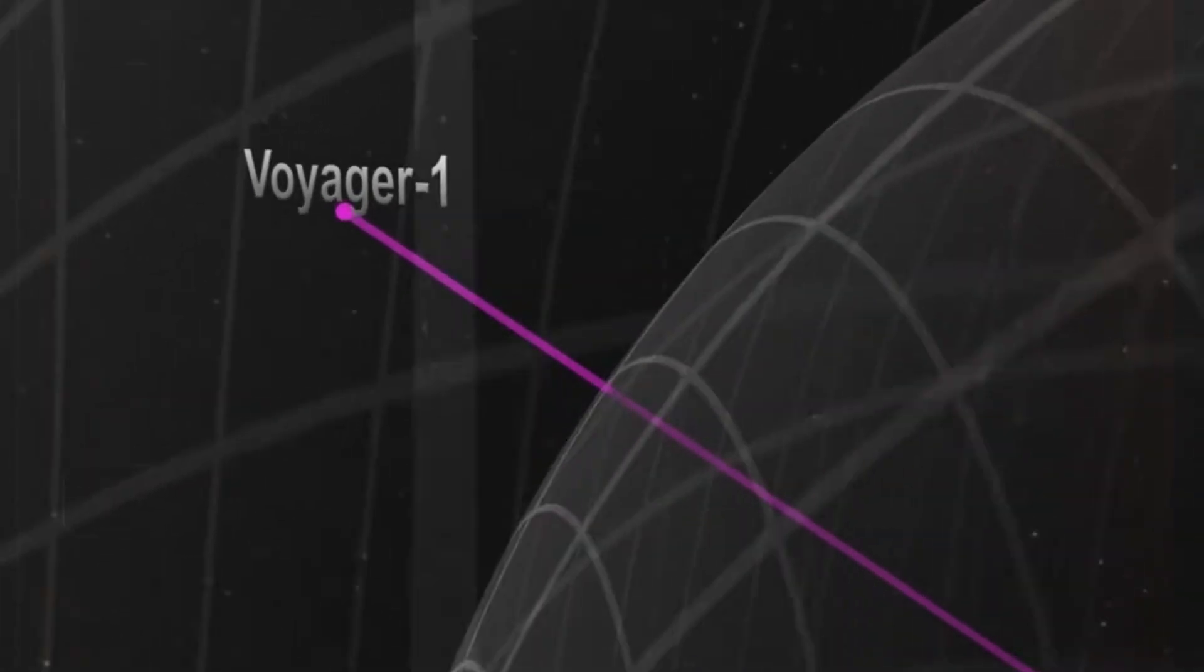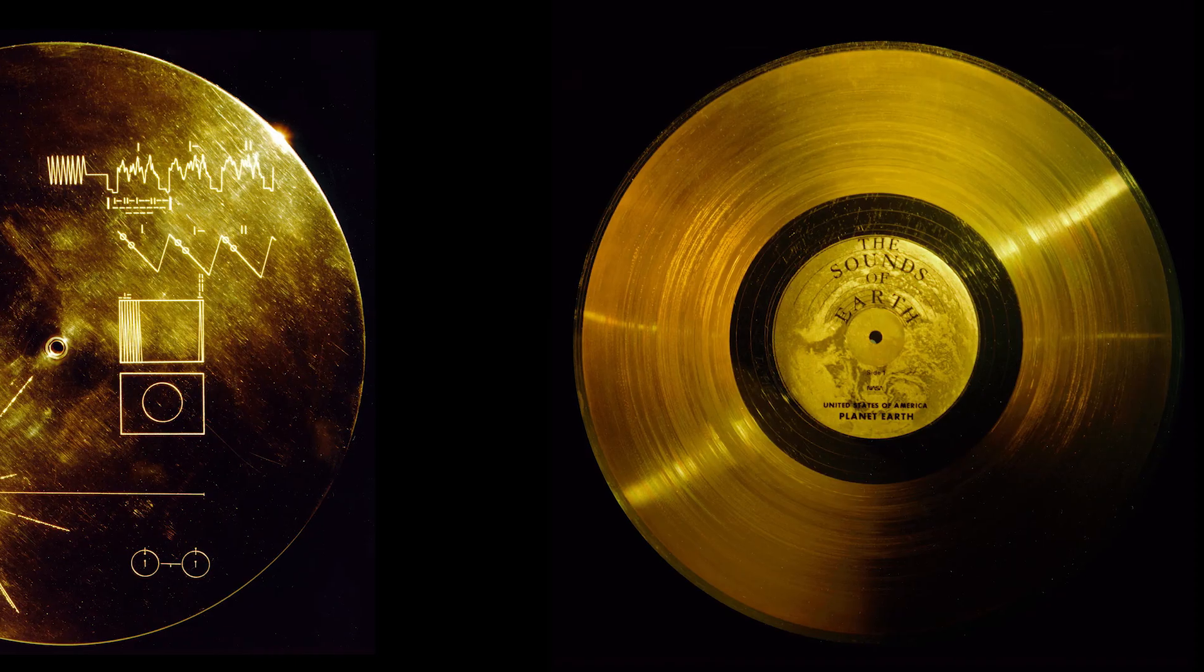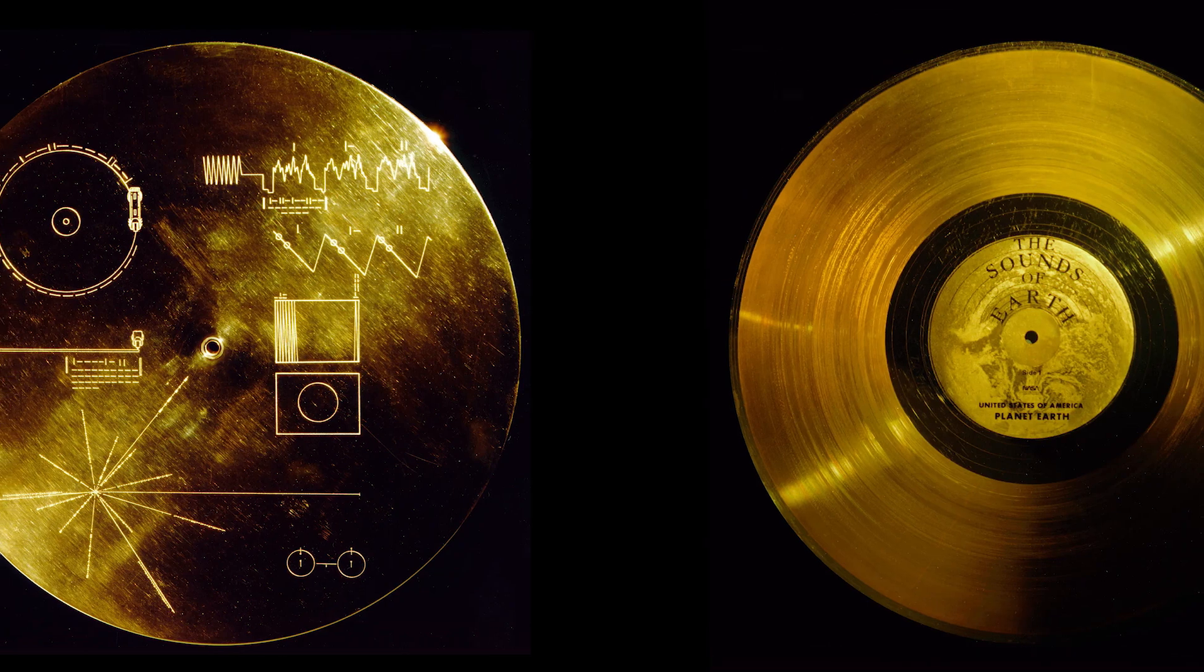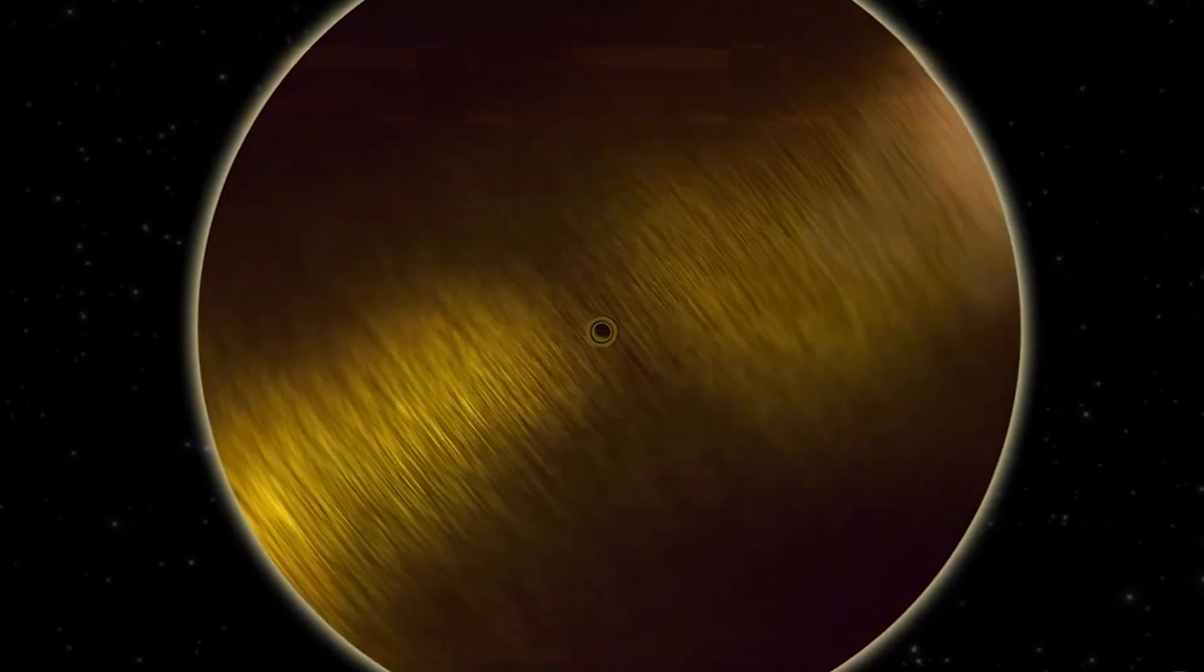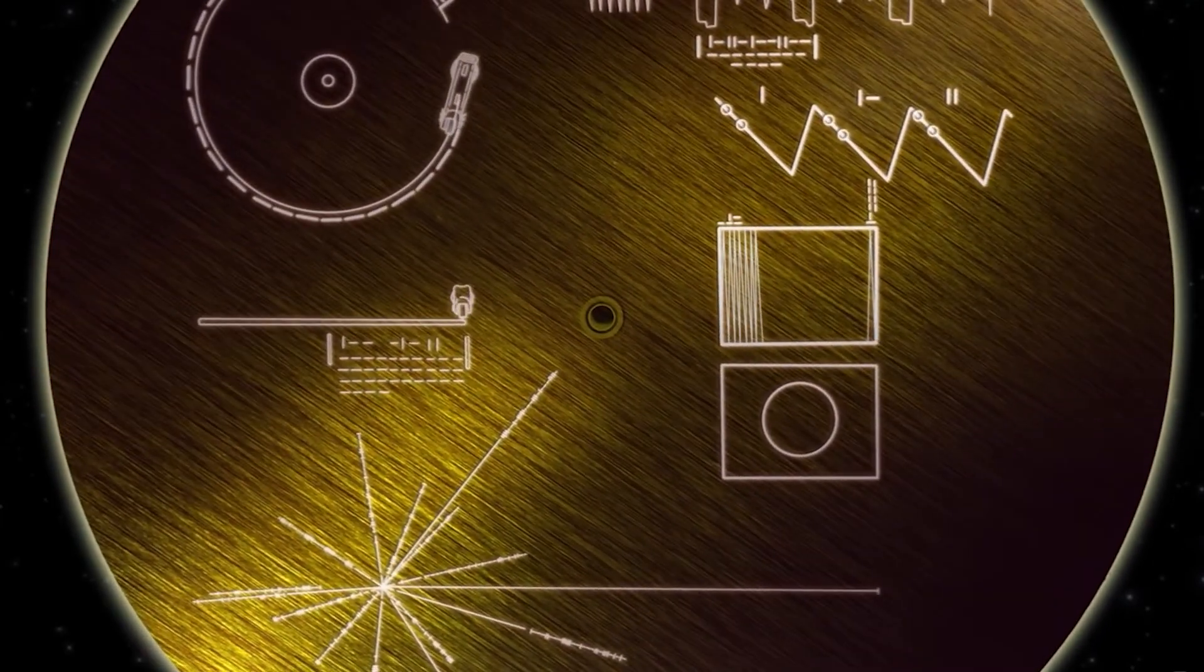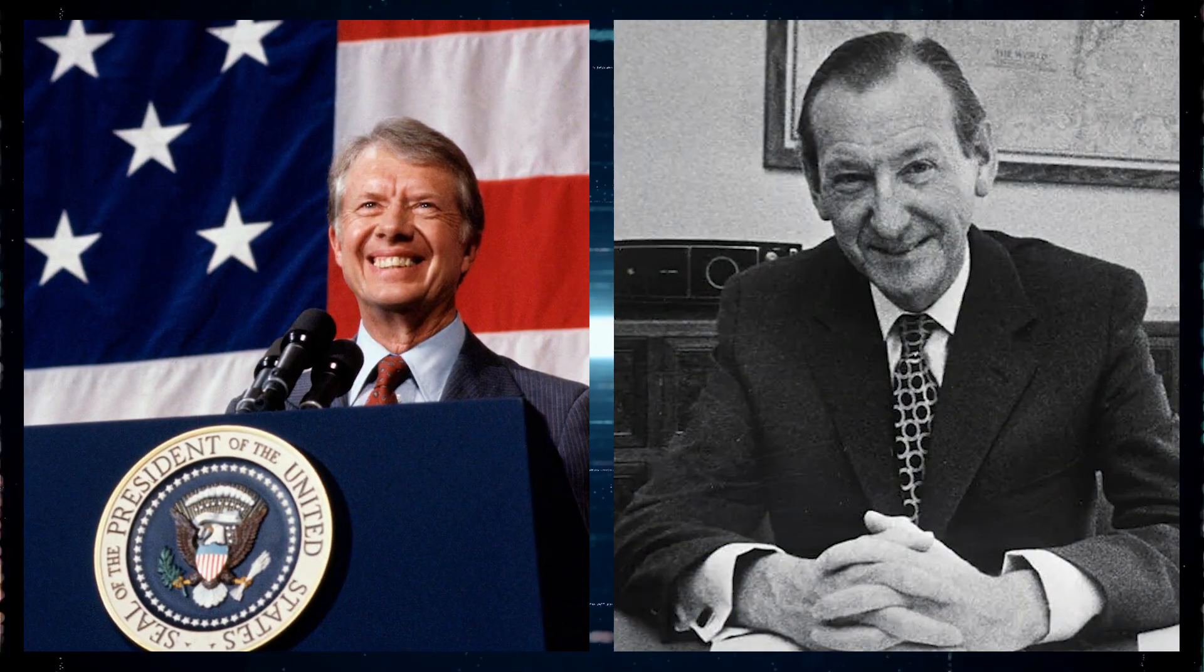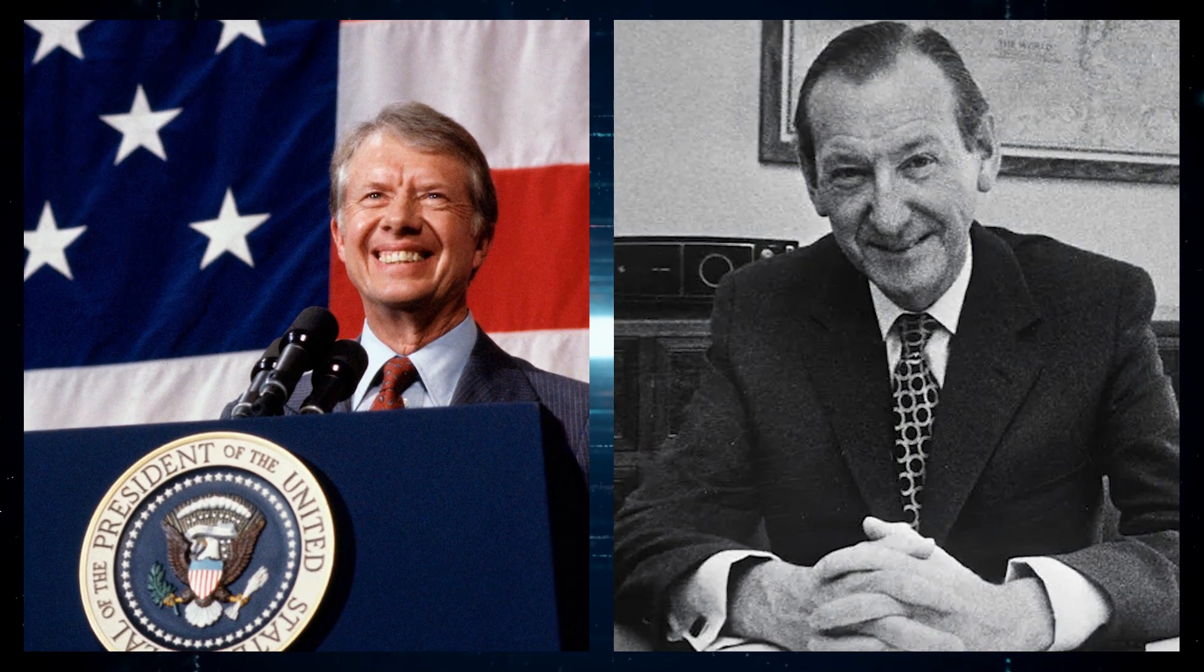Voyager 1 also carries a special message for any intelligent life that might find it. This message is a gold-plated record with sounds and images from Earth, including music from different cultures, natural sounds like whales and the wind, and greetings in 55 languages. It even has a message from the President of the United States at the time, Jimmy Carter, and the UN Secretary General, Kurt Waldheim.